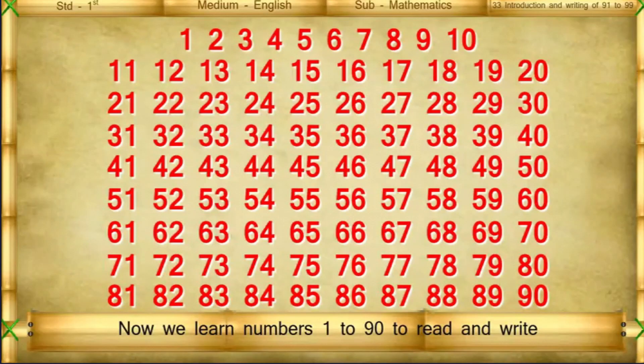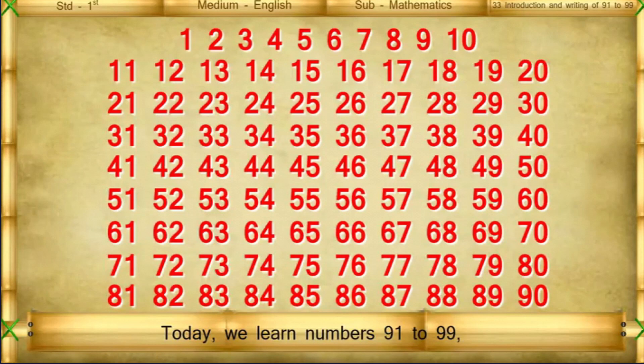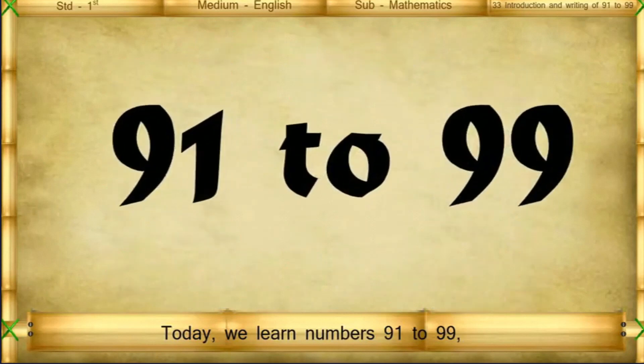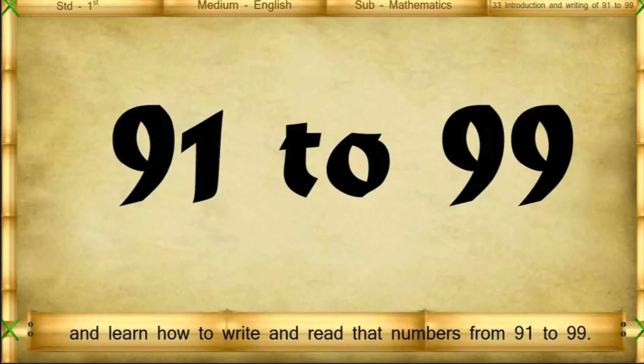Now we learn numbers 1 to 90 to read and write and also learn how to write before and after numbers. Today we will learn numbers 91 to 99, that is numbers after 90, and learn how to read and write the numbers from 91 to 99.